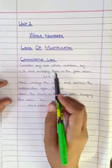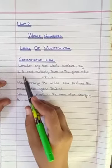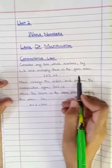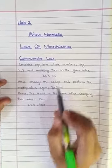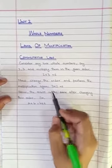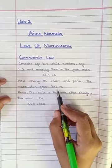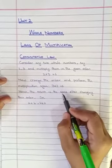You can see in commutative law, consider any two whole numbers, 2 and 3. We have multiplied them, then the result will be 6. If you change the order, 2 and 3, then the result will be the same.